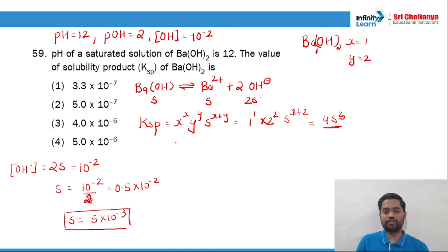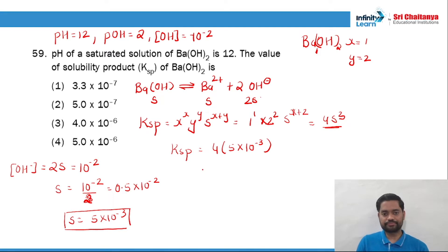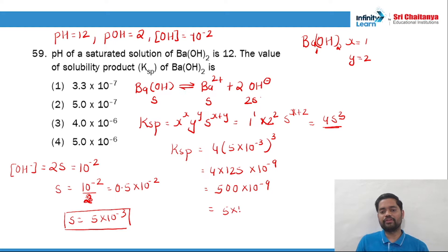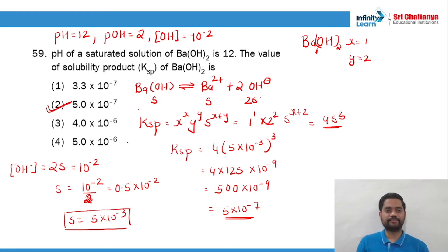So Ksp = 4 × (5 × 10⁻³)³ = 4 × 125 × 10⁻⁹ = 500 × 10⁻⁹ = 5 × 10⁻⁷. Hence option 2 is the right answer.